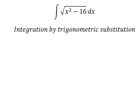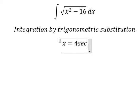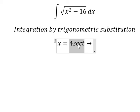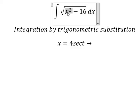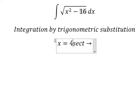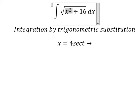I need to put x equal to 4 sec(t). If I put this substitution in, I get 16 sec²(t). We can do factorization: 16 times (sec²(t) minus 1), and then simplify the square root.